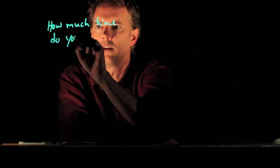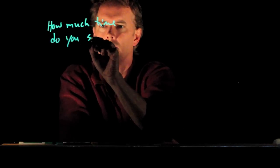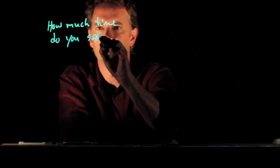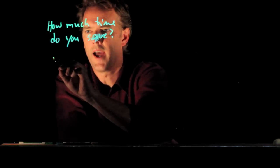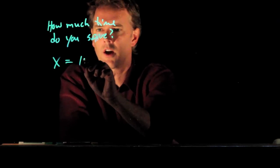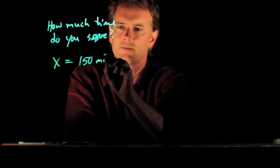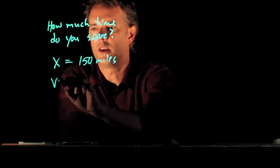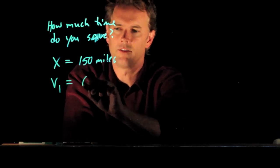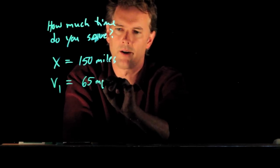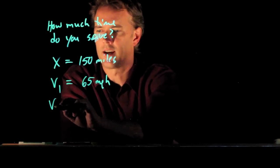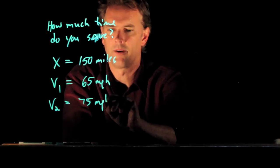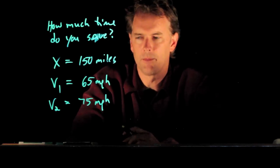And so we will use some typical numbers. How much time do you save? So X we said was 150 miles. And the first time you do it, V1, you drive at 65 miles per hour. And the second time you do it, you drive at 75 miles per hour. And let's figure out how much time you save.